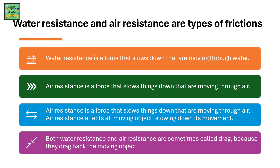Water resistance and air resistance are types of friction. Water resistance is a force that slows down any moving object that is moving through water. Air resistance is a force that slows down any object moving through air. Both water resistance and air resistance are sometimes called drag because they drag back the moving object.